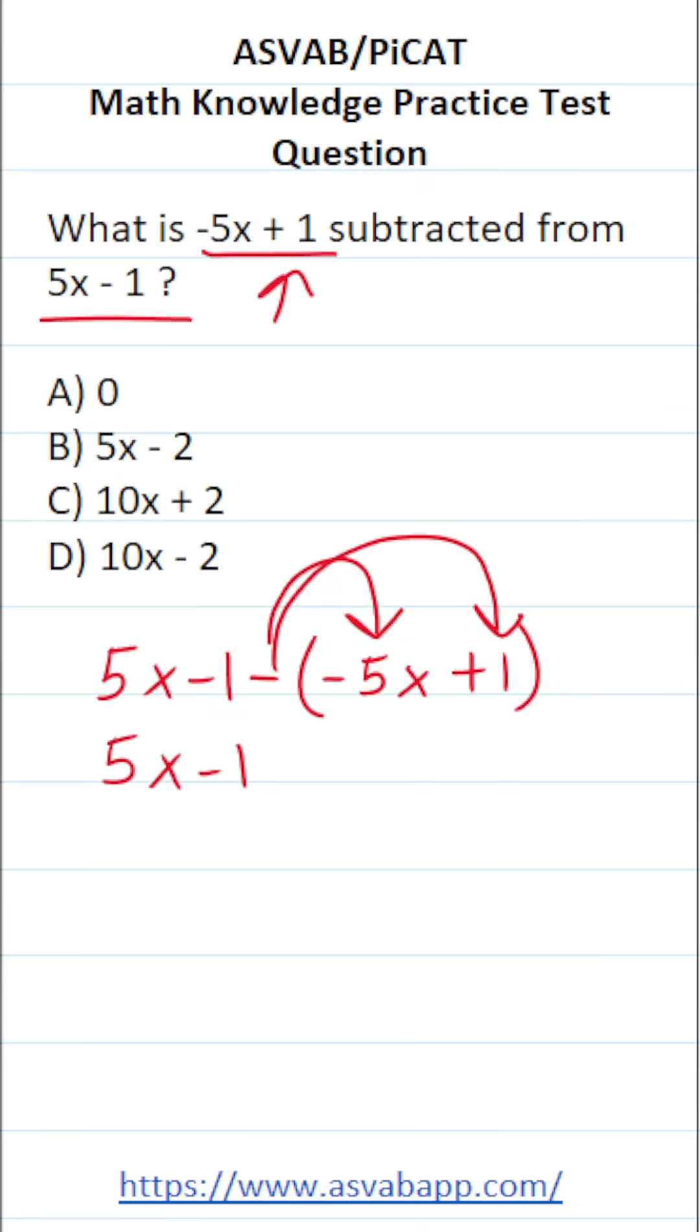A negative times a negative is going to be a positive. So negative times negative 5x is going to be plus 5x. A negative times a positive, on the other hand, is going to be a negative. So negative times positive 1 is going to be negative 1.